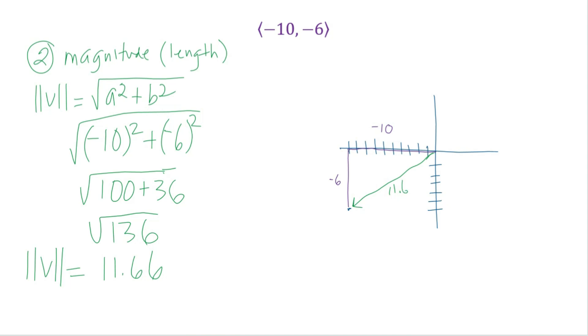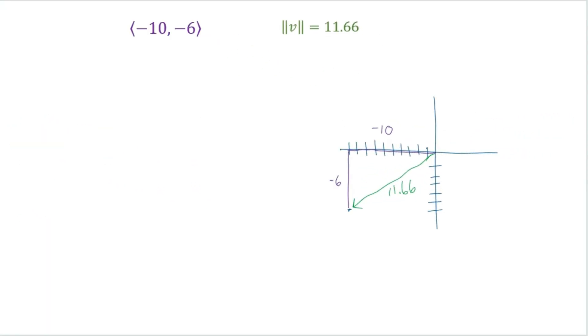11.66 is the length of the magnitude. So we have our component form and we have the length of our vector, which is the magnitude.